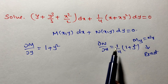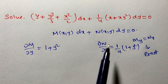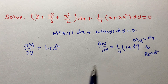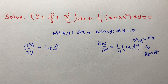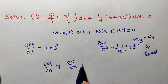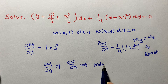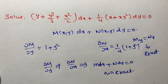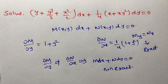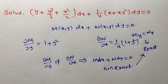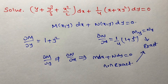Observe, friends — are both equal? No, this is not equal. ∂M/∂y is not equal to ∂N/∂x. So the given differential equation M dx + N dy = 0 is non-exact. We cannot get the solution directly. In this case, we have to reduce the given differential equation to an exact one. For that, we have to multiply an integrating factor.